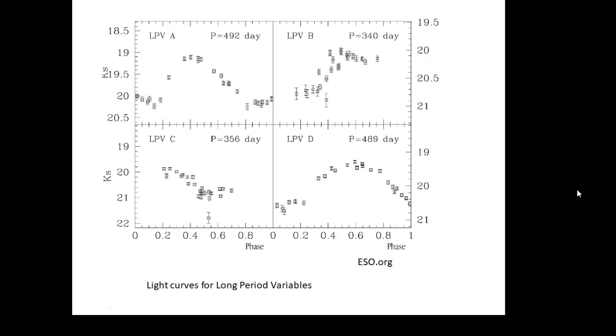Here are some light curves for some long period variables. Basically, the brightness goes up and down regularly as the star pulsates. These ones have a period of about a year.